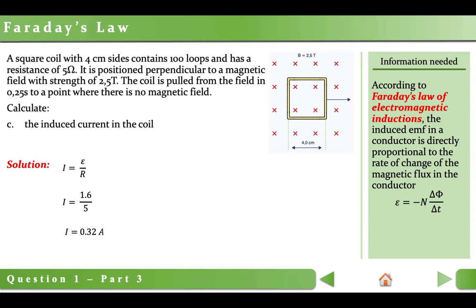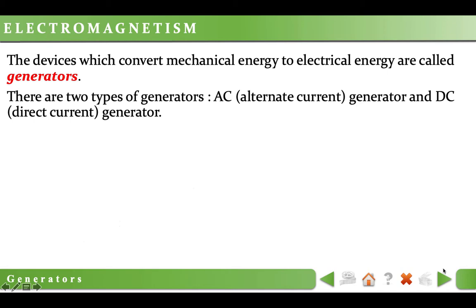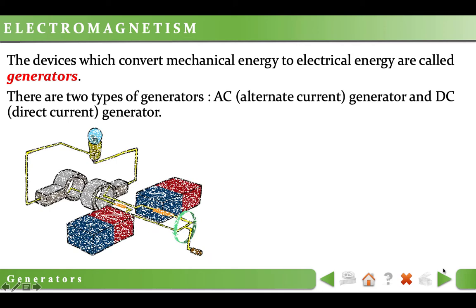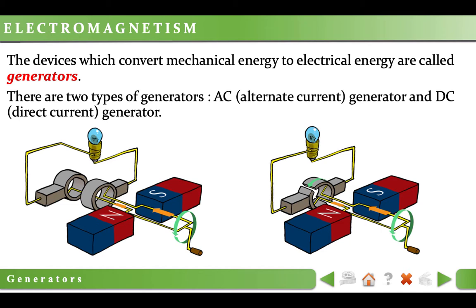Let's go back to our topic. There are two main types of devices we will study: generators and motors. The devices which convert mechanical energy to electrical energy are called generators. There are two types of generators: AC (alternating current) generator and DC (direct current) generator. In both figures, you can see a handle which rotates a coil inside a magnetic field. In the process, the magnetic flux of the coil constantly changes, causing induced current — meaning we have converted mechanical energy to electric energy by producing induced current through electromagnetic induction.